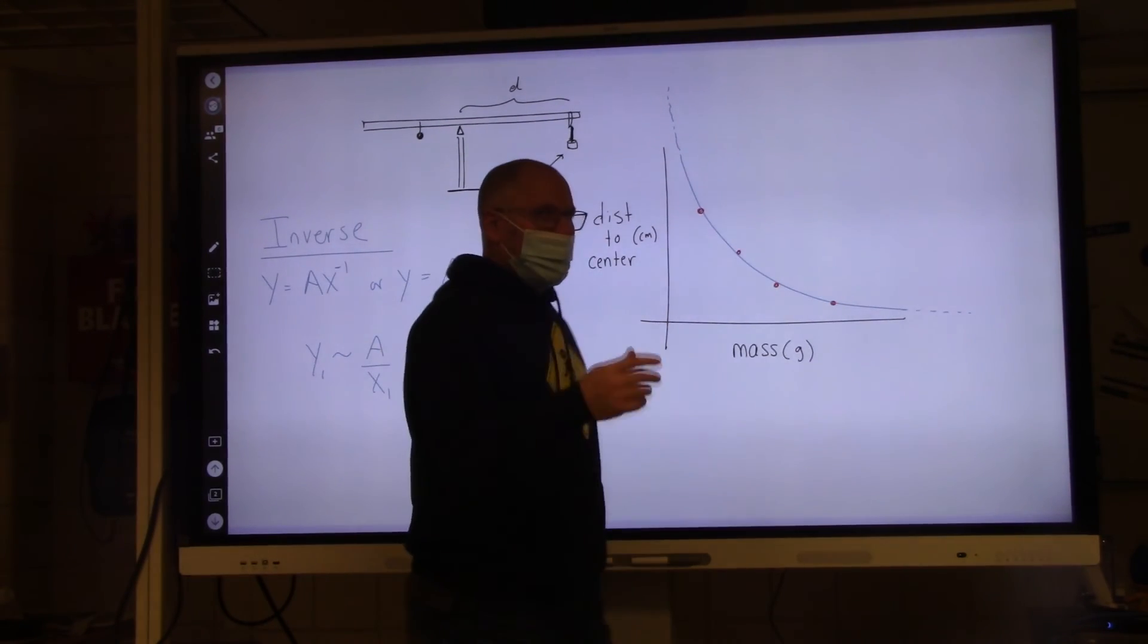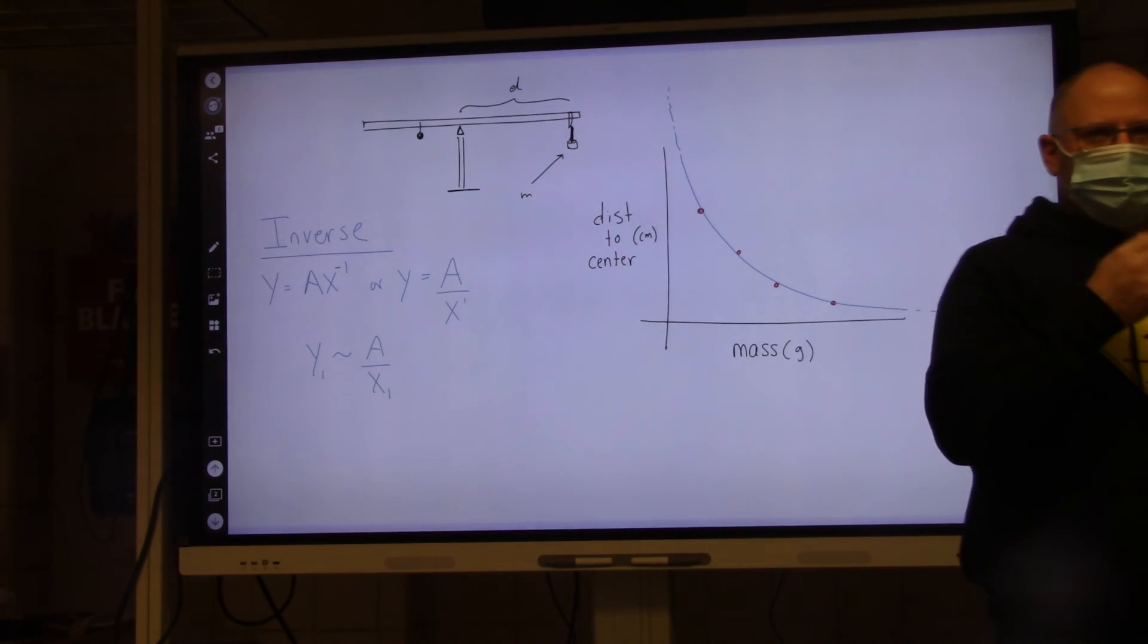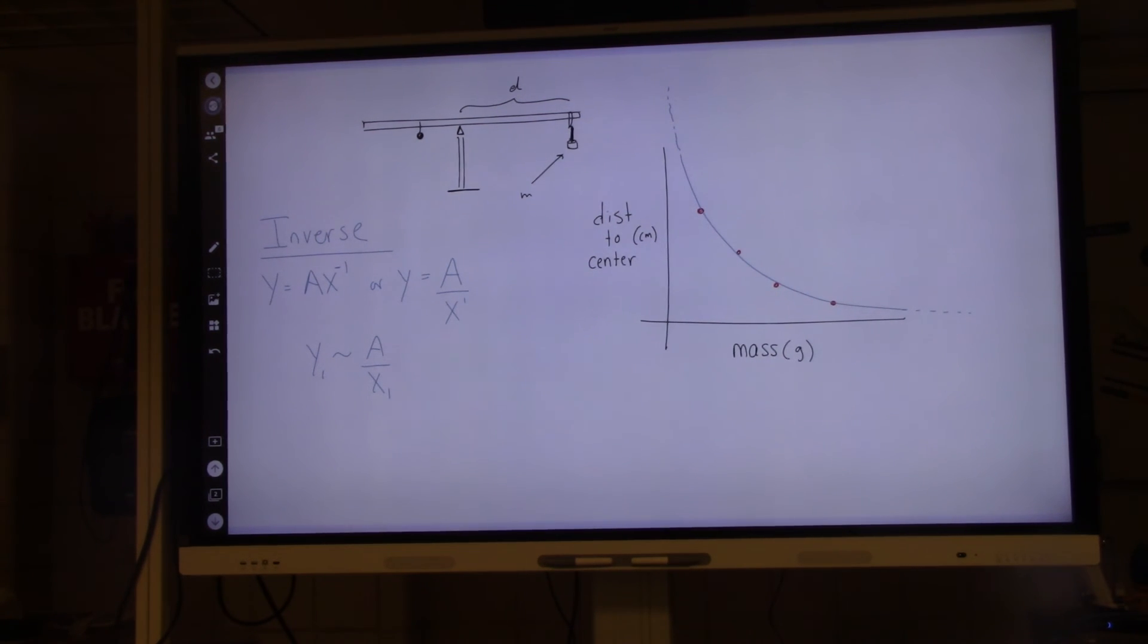So, when you analyze it with Desmos, you're going to do Y1 squiggle A over X1. We have to add the X1. Oh, yeah, we do have to add the X1. Yeah, because it's like... That was a stupid question. No, it wasn't.